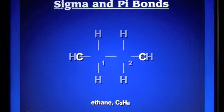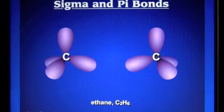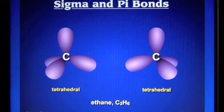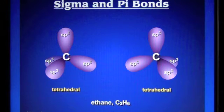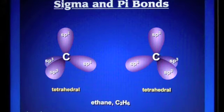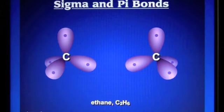For a tetrahedral arrangement the bond angles are 109.5 degrees and the hybridization will be sp3 hybrid orbitals. So we're going to see around each carbon we have four sp3 hybrid orbitals. Carbon has a valence of four, so we're going to place a valence electron in each one of these sp3 hybrid orbitals around each carbon respectively.